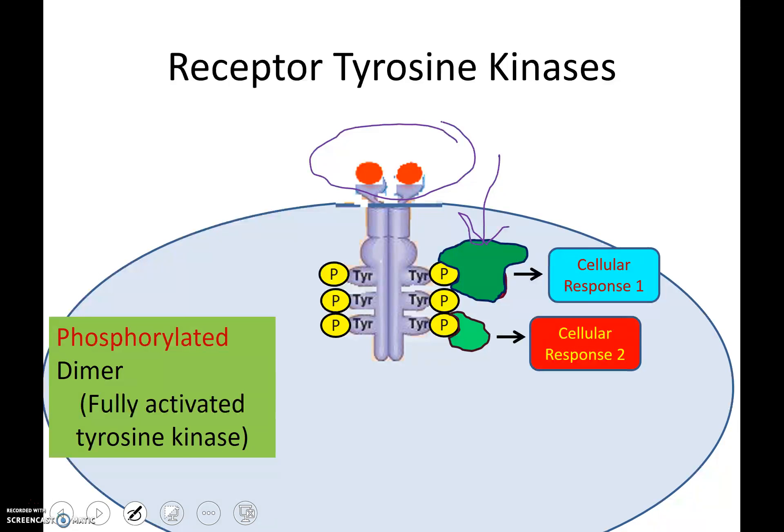So there can be multiple cell responses all from one binding activity. Within a cell, if this were insulin, you're going to have a whole bunch of changes happening to bring down blood sugar levels. Or if this was a cell going through mitosis, you would have a whole bunch of things that need to happen inside that cell for it to become two. Receptor tyrosine kinases are really cool because it's just one signaling event, one signaling molecule coming in to attach, and yet you can have multiple cell responses from that.